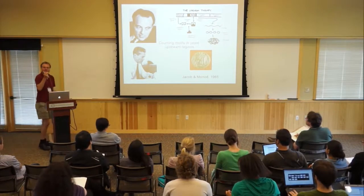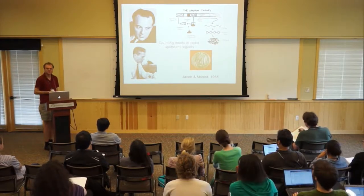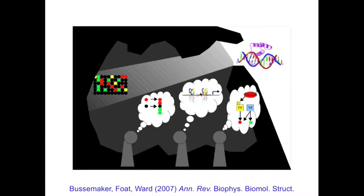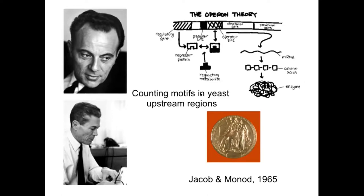Jacob and Monod got the Nobel Prize for figuring out the mechanism of dynamic regulation of gene expression. The lac operon captures the two aspects of regulation I'll be going into in depth. On the one hand, you have this repressor protein that binds to its operator in the DNA — a specific sequence preference. It binds very specifically to that place in the genome to control the set of genes that need to be activated if you run out of lactose. But there's also a metabolite being sensed by the CAP factor, and it's only active in the right conditions. So on one hand we have sequence specificity of the DNA binding protein, but also its activity — whether it switches on its target genes — depends on the cellular conditions.